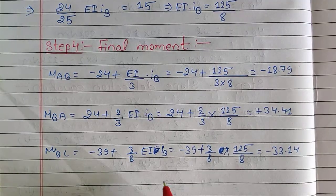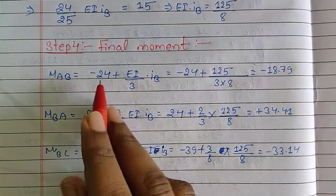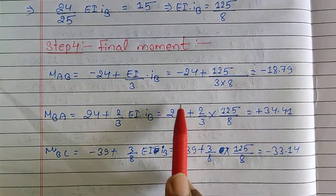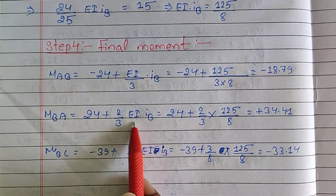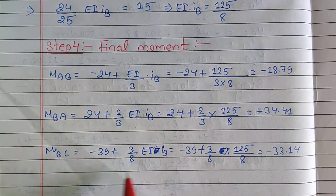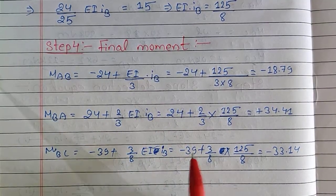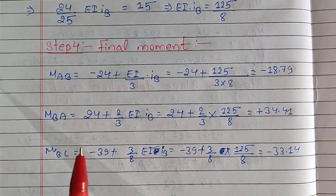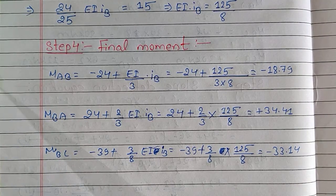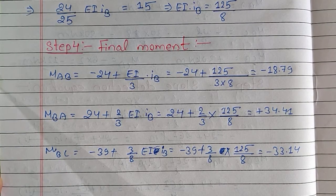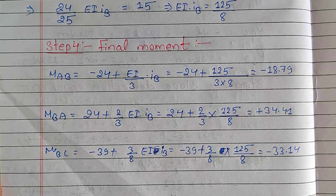In step 4, the value of EI·θB is substituted into each equation derived in step 2 to find the final moments at each support. With those final moment values determined, we move to step 5 which is drawing the bending moment diagram.